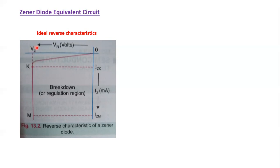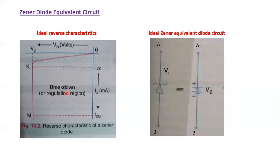The voltage remains the same even as current changes, so ideally I can say the resistance is zero. Resistance is V/I, or in terms of incremental changes, ΔV/ΔI. Since the change in voltage is zero, the ideal resistance of the Zener diode is zero.